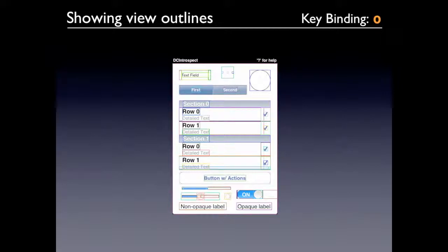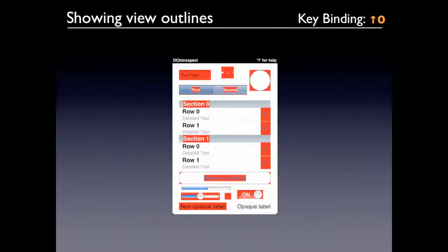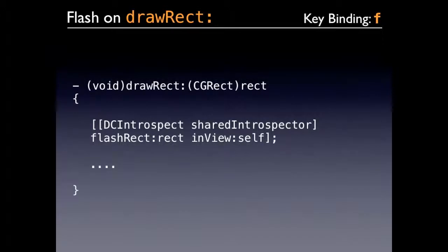Showing view outlines is good for finding rogue views that have somehow made their way in there. There's also a 'flash on draw rects' feature. The way you implement this is inside the drawRect of the view you want to flash, you call flash rect in view. You can use self.bounds if you want to do the whole view, but I prefer just passing rect so you know if you're only redrawing part of it. That'll throw a CA layer on, you can change the color if you want, and then it takes it off straight away. There is a flag you can set in Instruments, but you're never in Instruments when you want to be.